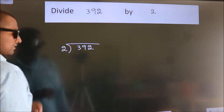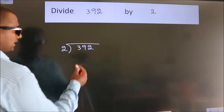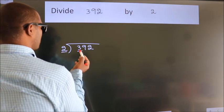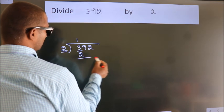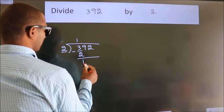This is your step 1. Next. Here we have 3. Here 2. A number close to 3 in 2 table is 2 once 2. Now we should subtract. We get 1.